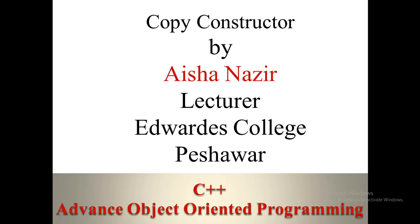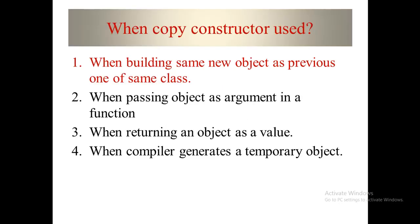In the previous lecture we have seen four different scenarios in which we need a copy constructor. The first one was when we need a copy of an already existing object — so instead of defining the same object again and again, we create a copy of that specific object. Today we will discuss the second scenario: passing an object as an argument in a function.